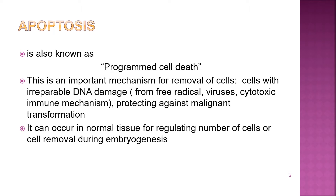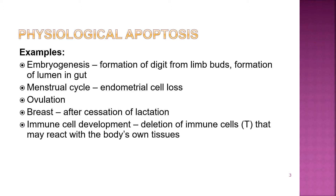Apoptosis can occur in normal tissue for regulating the number of cells, or for removing cells during embryogenesis. These are examples of physiological apoptosis.